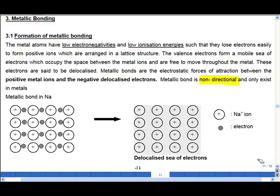But instead of having cations and anions arranged in a lattice structure, there are only metal cations that are being arranged in a lattice structure.